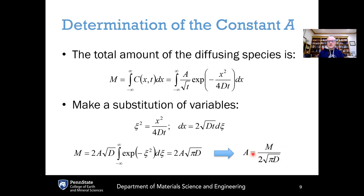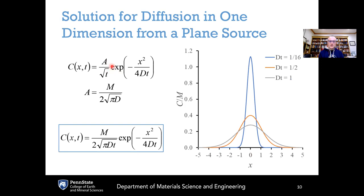Solving for A: A equals M over 2 times the square root of pi·D. Substituting back into our proposed solution gives the final solution for diffusion from a plane source — concentration as a function of x and t equals M over 2 times the square root of pi·Dt, times e to the minus x squared over 4Dt.